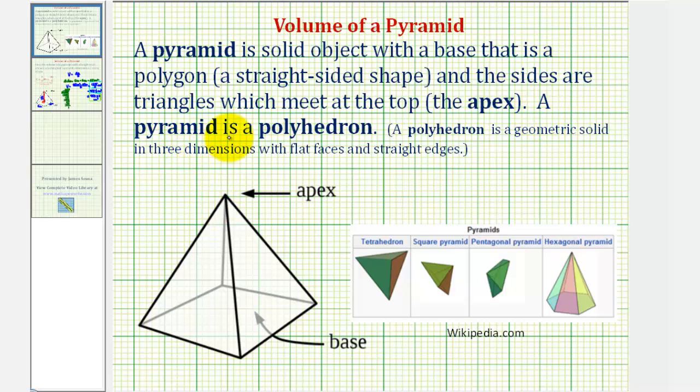A pyramid is also a polyhedron. A polyhedron is a geometric solid in three dimensions with flat faces and straight edges. By this definition, all pyramids are polyhedrons.